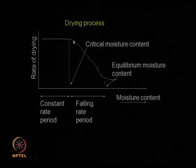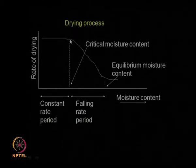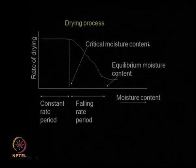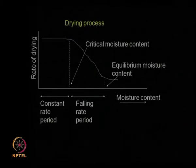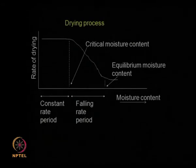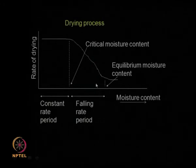The constant rate period and the falling rate period are separated by something called the critical moisture content — the moisture content up to which the rate of drying is constant, and below which the rate of drying keeps falling with time. So you have a constant rate period, a falling rate period, and in between you have the critical moisture content, and finally you have the equilibrium moisture content.